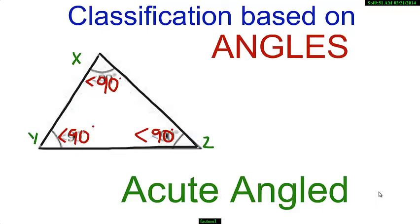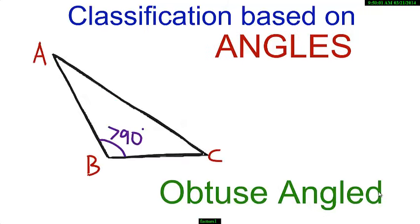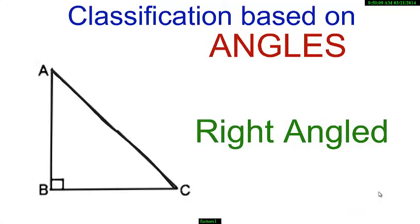Triangles are classified based on their angles as acute angled if all angles are acute, that is less than 90 degrees, or obtuse angled if one angle is greater than 90 degrees, right angled if one angle is equal to 90 degrees.